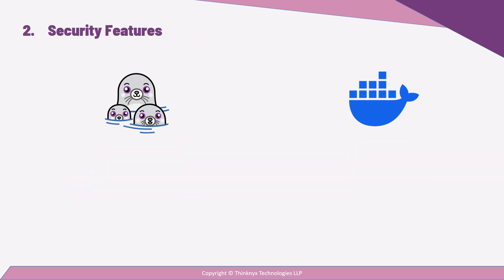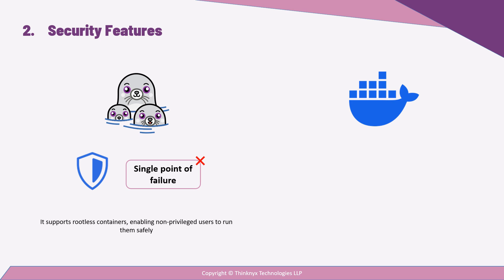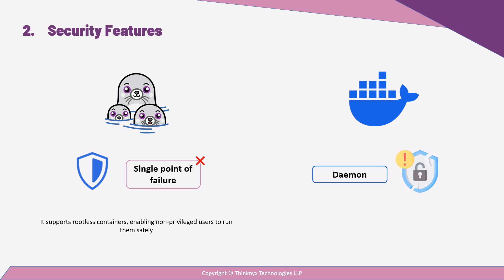With Podman, security is enhanced thanks to its daemon-less design, which eliminates a single point of failure. Moreover, it supports rootless containers, allowing non-privileged users to run containers safely. Initially, Docker operated its daemon with elevated privileges, which could create vulnerabilities if not carefully managed. A compromised daemon might expose the host system to potential threats.